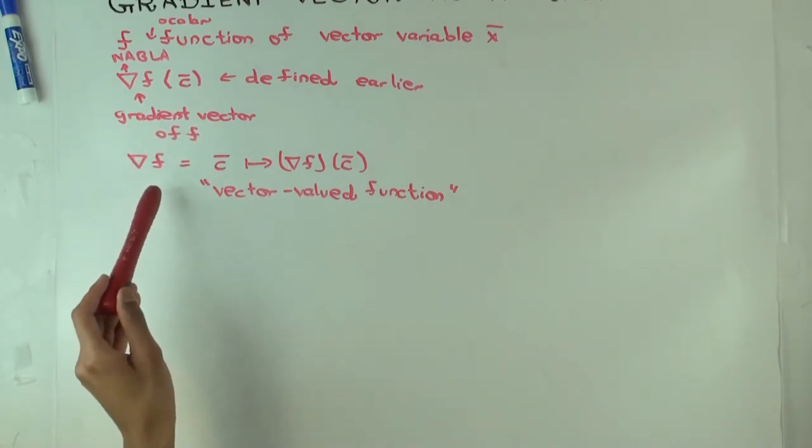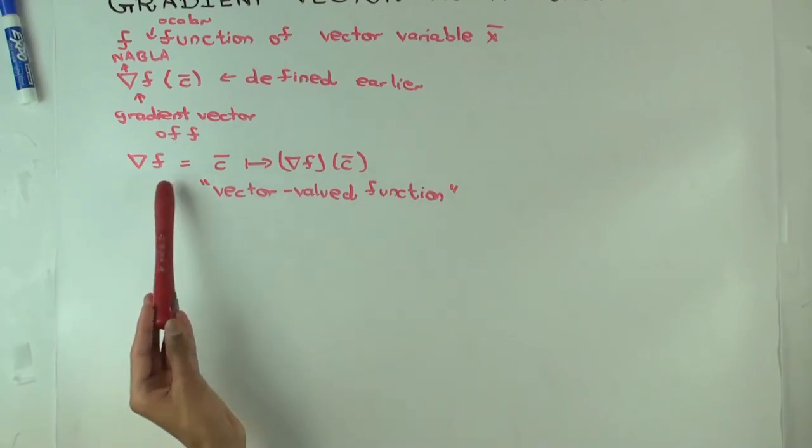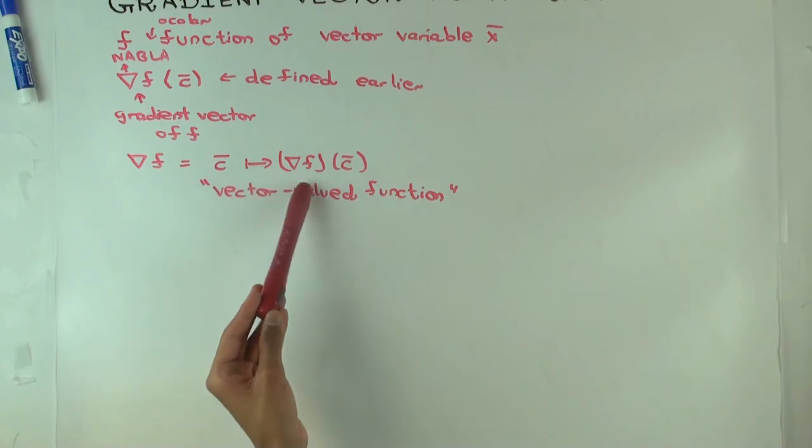what we think of as the derivative of this function, the gradient vector is basically the right notion of derivative. I just say what's the derivative. The derivative is not a scalar function. It's, in fact, a vector-valued function.